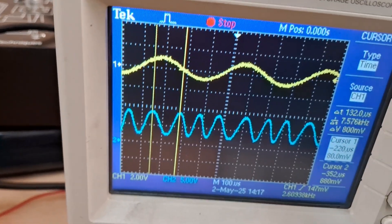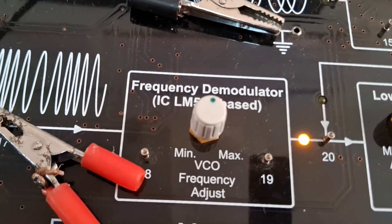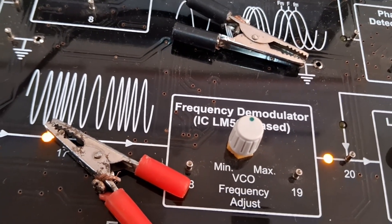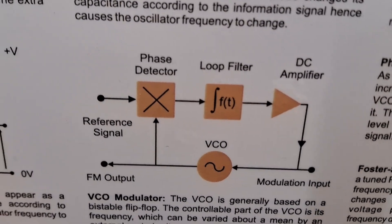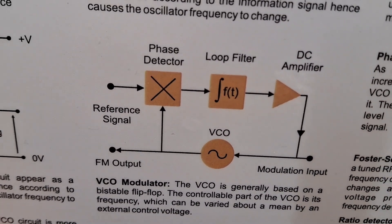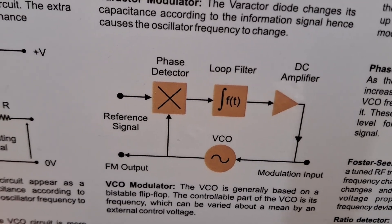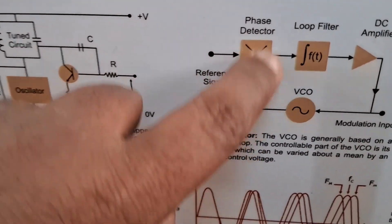Coming to the reconstruction side, we have an IC which is a PLL IC called LM565, used for reconstruction. The PLL has three basic blocks: first is the phase comparator, second is the low pass filter, and third is the VCO (voltage controlled oscillator). One input to the phase detector is the FM signal and the second is a reference frequency.